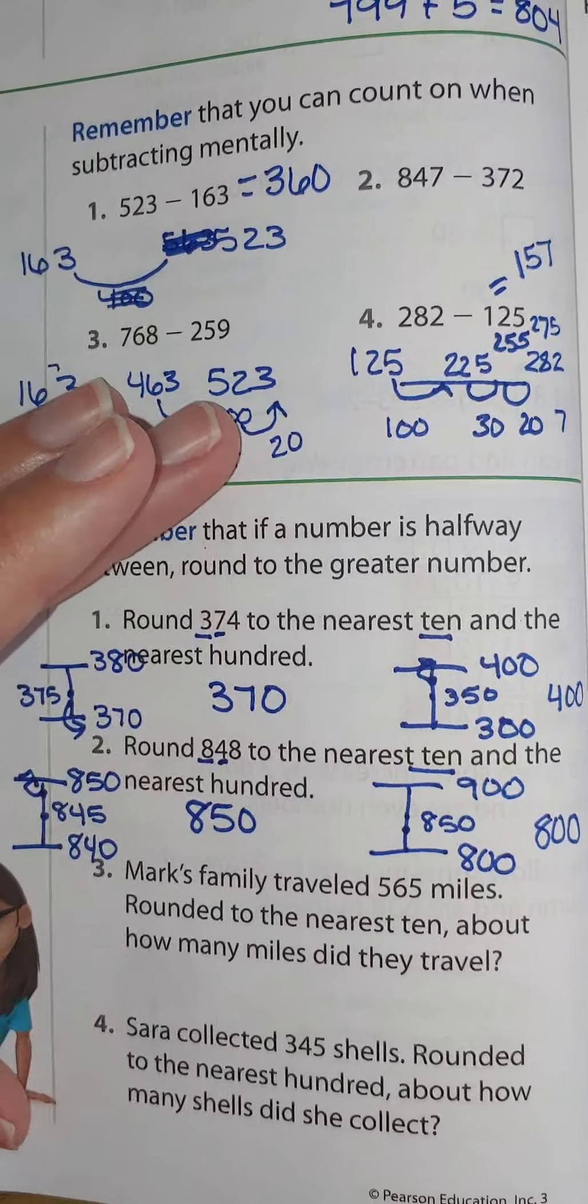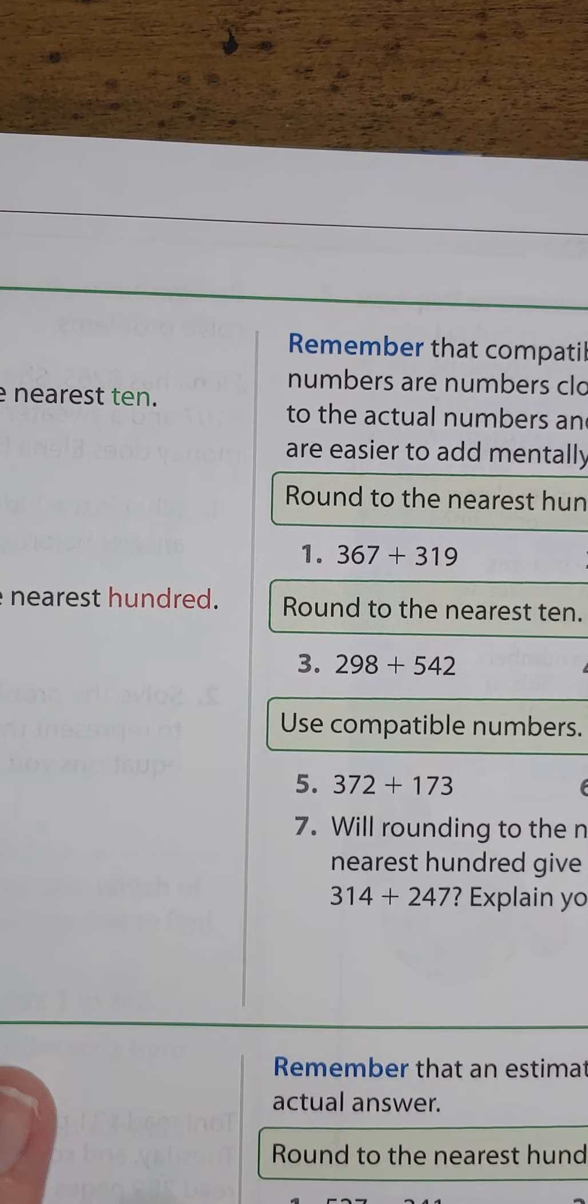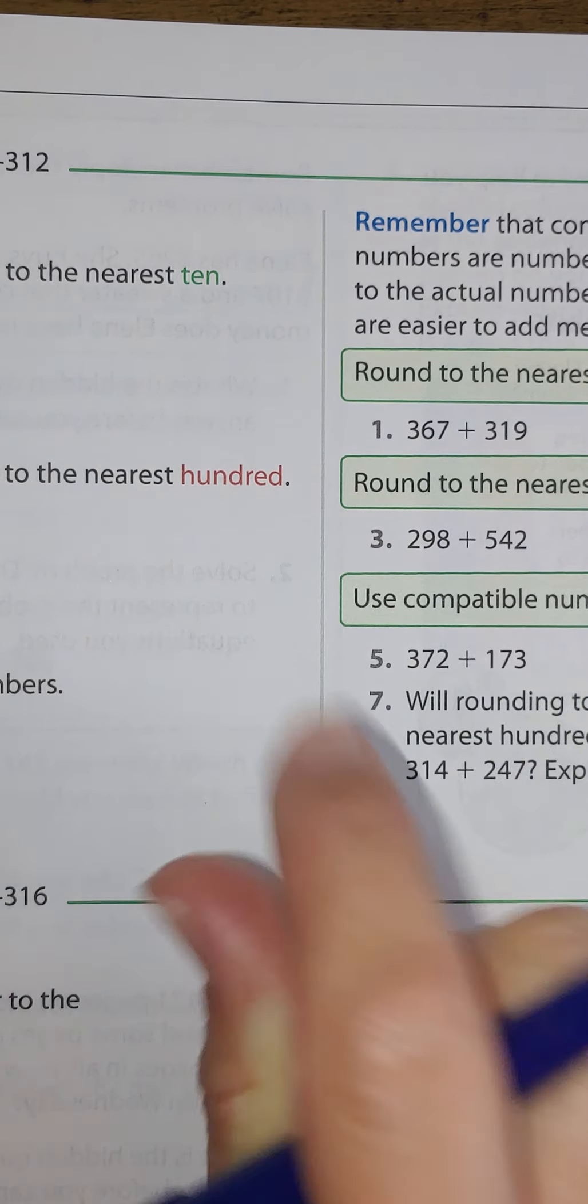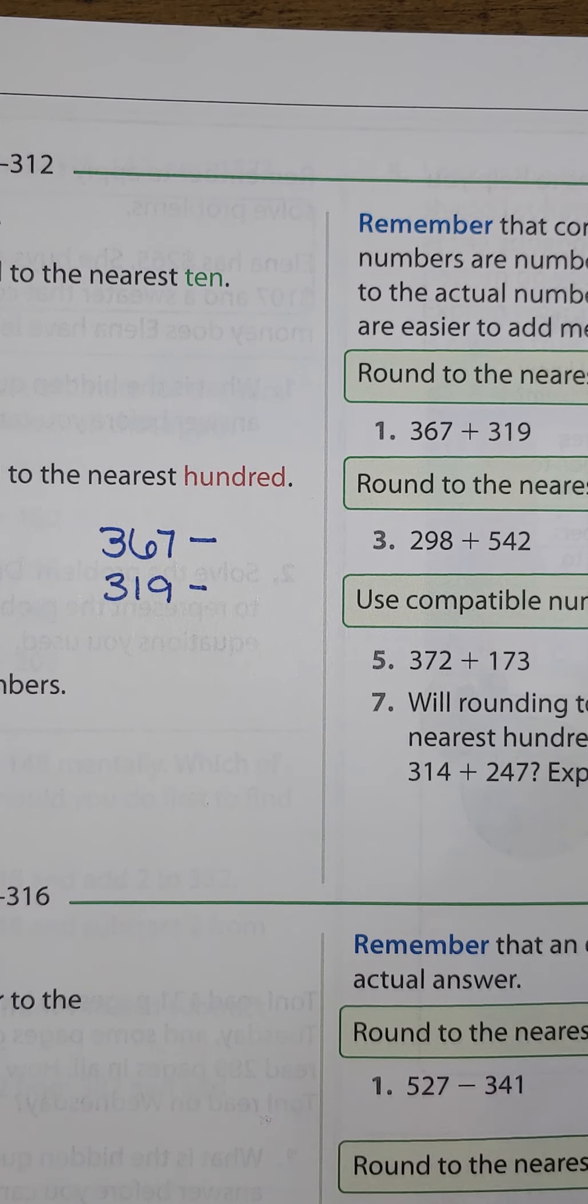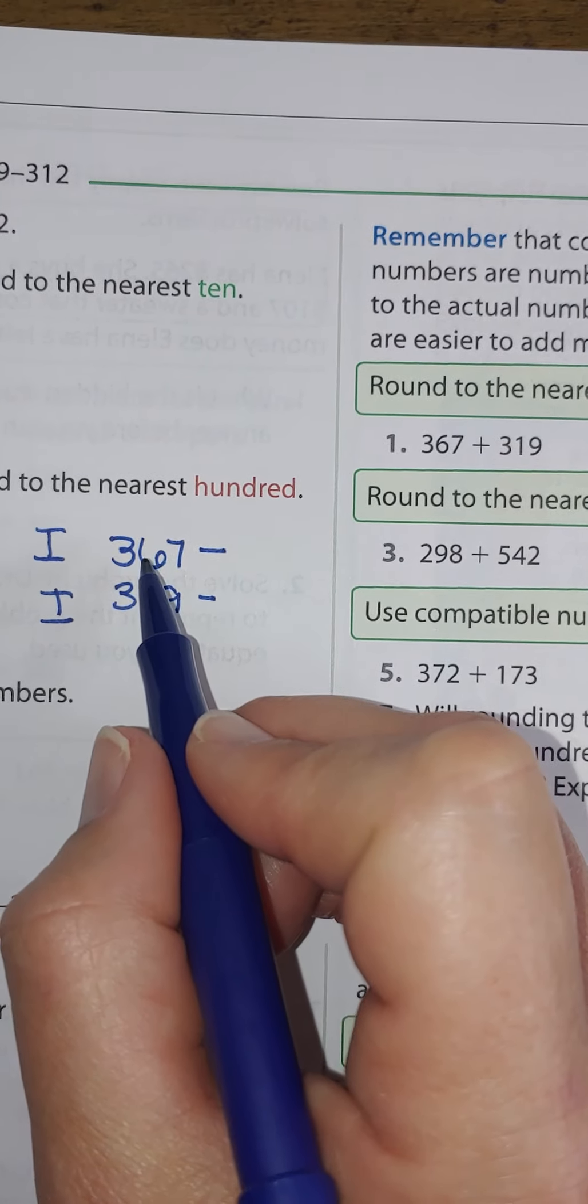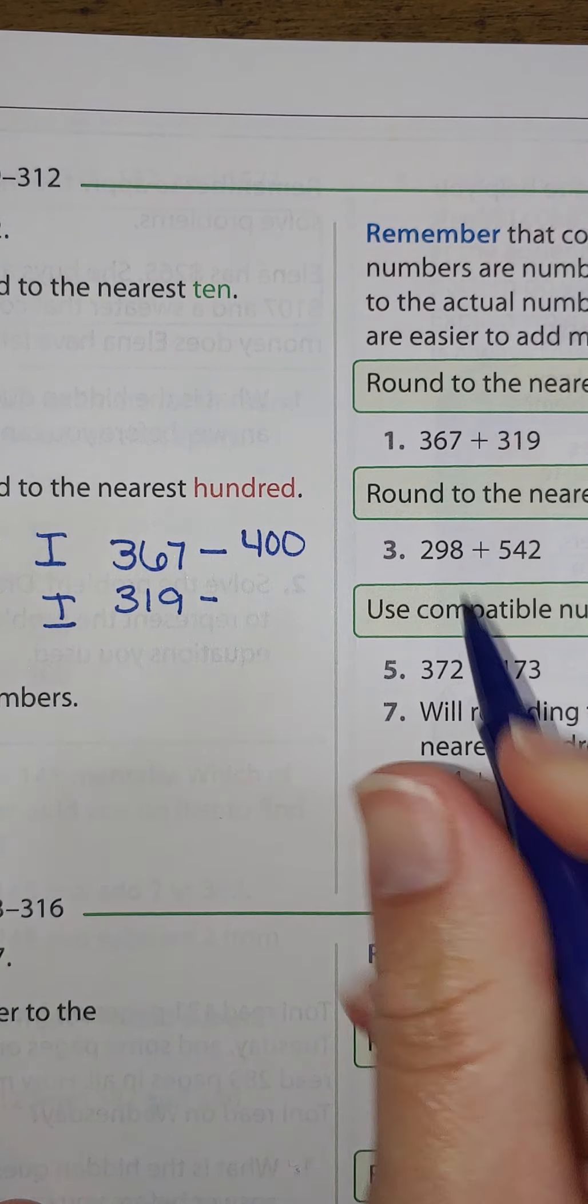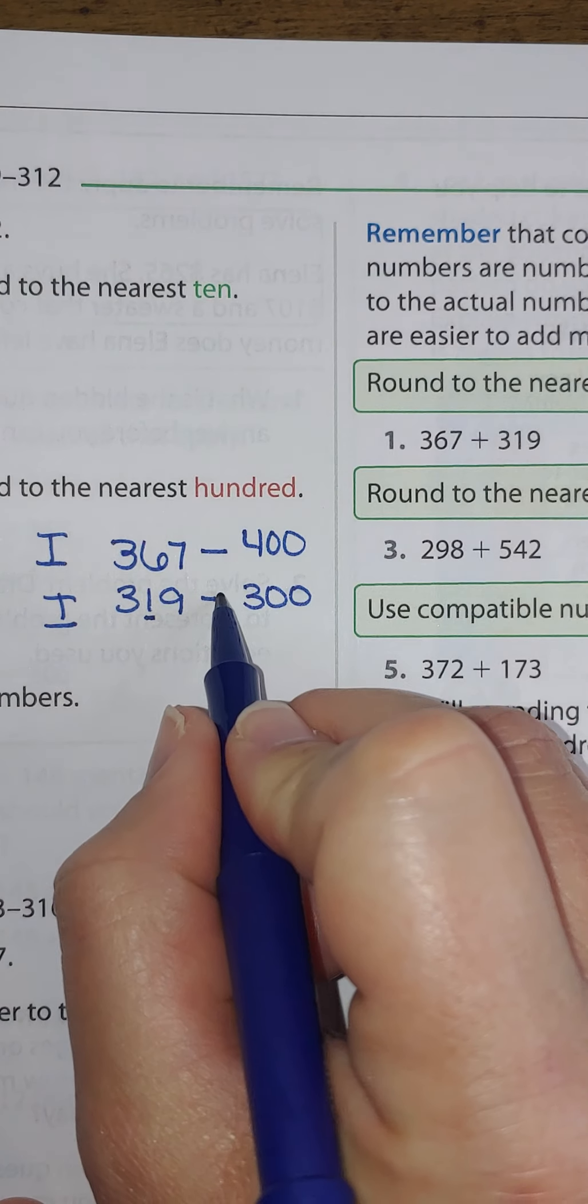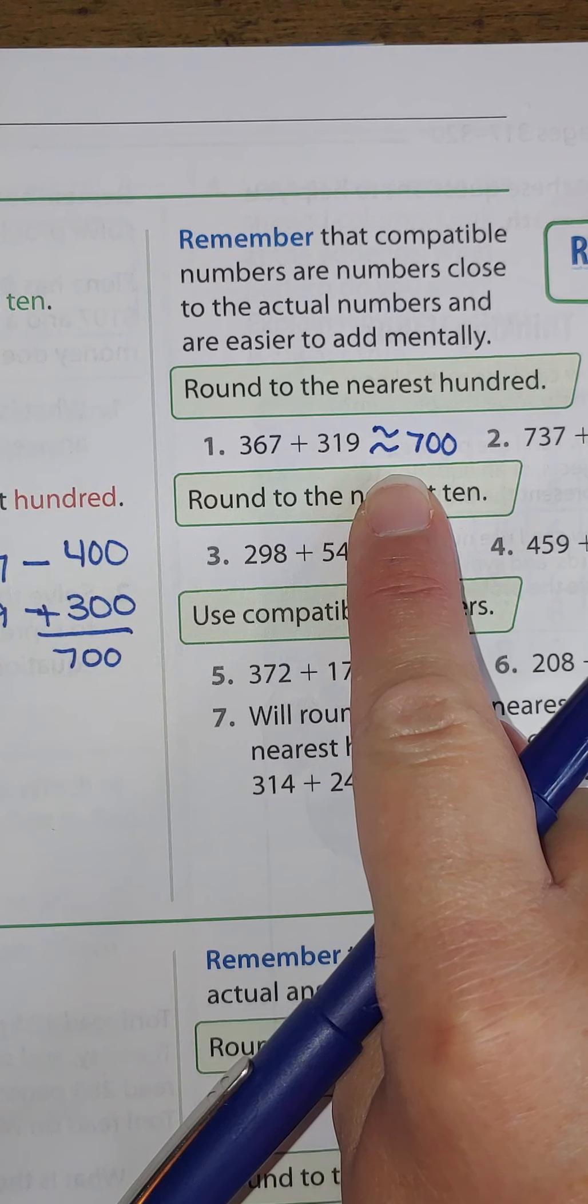You can do the same thing for numbers 3 and 4 as a review. Let's go to page 325 to review. Let's estimate, which is what they're asking us to do here, rounding to the nearest 100. I'm going to use some space over here to solve number 1. So 367 and 319. I can tell by looking that 60 is higher than 50, so this is going to go up to the next set of 100s. I can tell that 10 is not far from 0, so this is going to go to 300. Then I'm going to add them and get an estimate of approximately 700. And this squiggly equal sign means approximately or about.